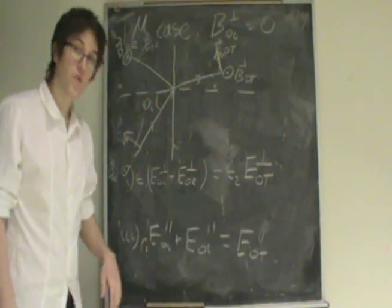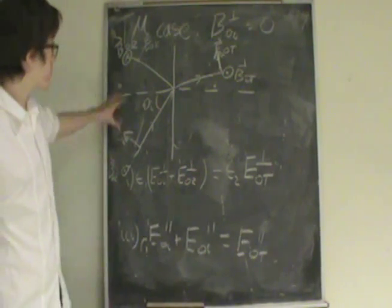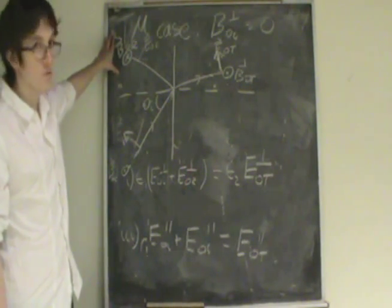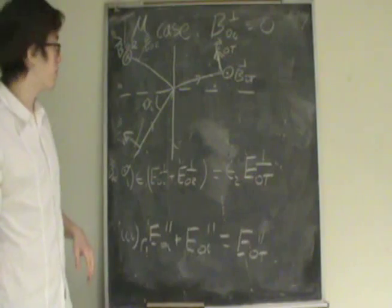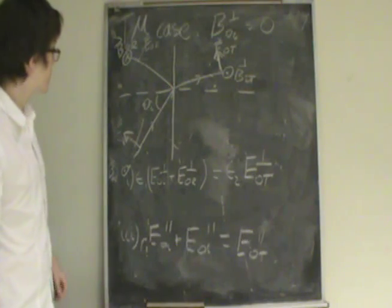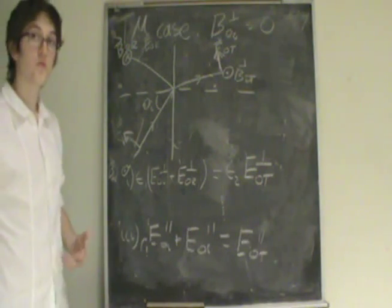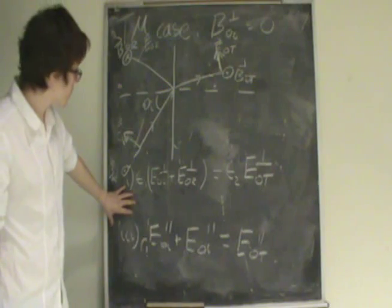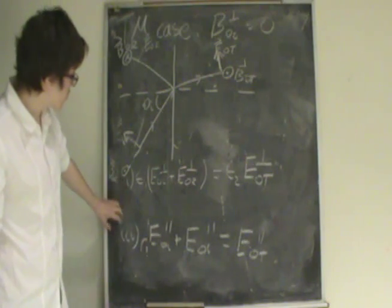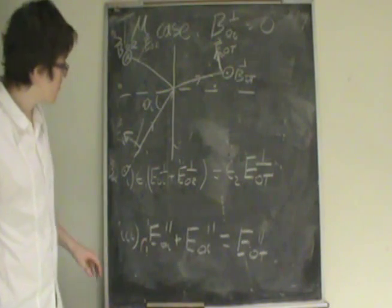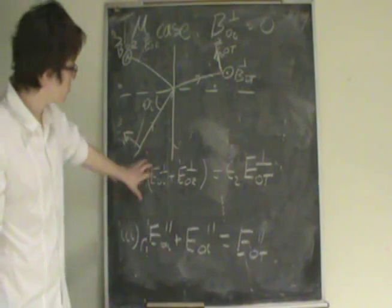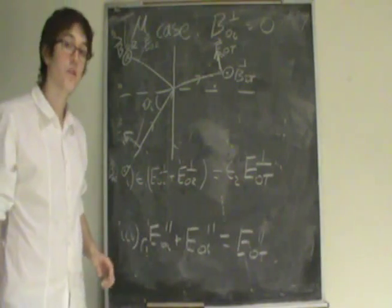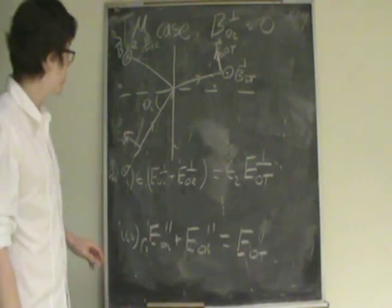Now we're going to look at our second case, our transverse magnetic case, which has parallel polarization. We're going to use again the equations derived on lecture 20, equations 1 and equation 3, which deal with the perpendicular and the parallel components of the electric part of the wave.